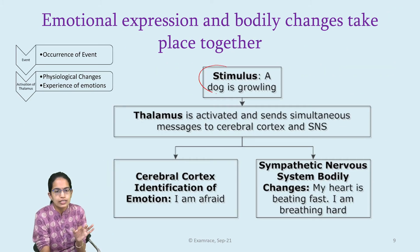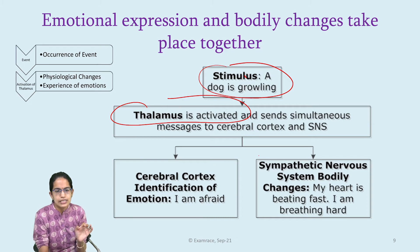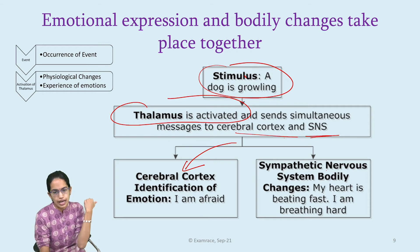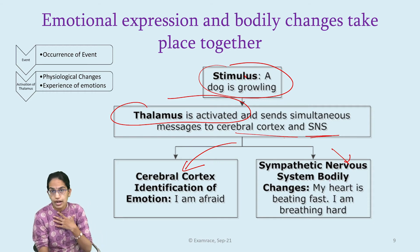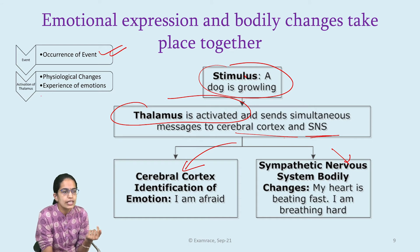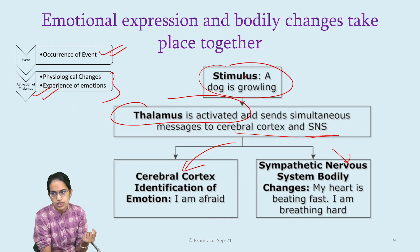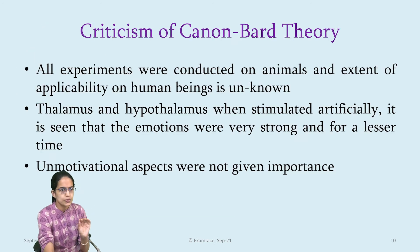For example, a dog is growling. The thalamus gets activated and the message is sent to the cortex and the sympathetic nervous system simultaneously. The cortex identifies that 'I am afraid,' while the sympathetic nervous system registers that the heart rate is very fast. So the occurrence of the event and the simultaneous expression of emotions and physiological changes — that is the basis for the Cannon-Bard theory.